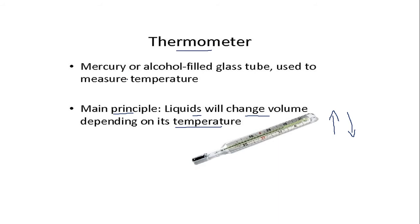A thermometer is filled with a liquid — either mercury or alcohol. It contains a very hard glass tube in which there is a bulb. Mercury is the liquid filled inside, and we call this the thermometric liquid. We generally use mercury, but we also use alcohol when we need to measure very low temperatures. The mercury or alcohol expands and rises in the capillary tube when temperature increases, and contracts and falls when temperature decreases.